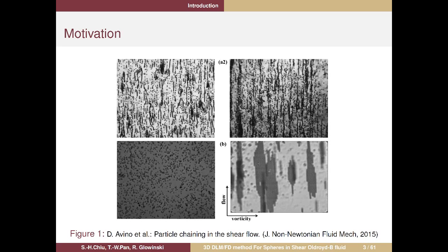In shear suspensions, the particles will align along the flow direction. As the shear rate gets higher, this alignment line gets longer. Another feature of this phenomenon is that when particles form a line, the angular velocity of particles in the line will reduce compared to the angular velocity of isolated particles. This is a very peculiar phenomenon, and we don't fully understand the details behind it or have a good way to reproduce it numerically.